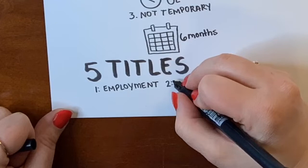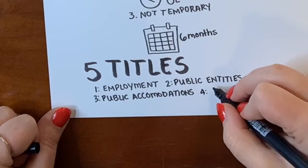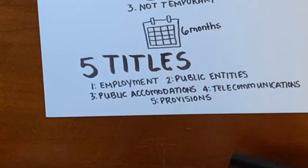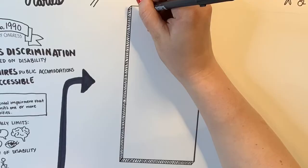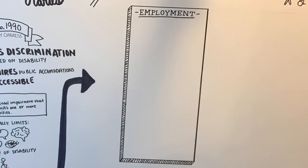The ADA is divided into five different sections called titles. Title I is about employment. Title II is about public entities and public transportation. Title III is about public accommodations and commercial facilities. Title IV is about telecommunications, and Title V is provisions. Let's take a look at Title I: Employment. This says that people with disabilities should have the same employment opportunities and benefits as everyone else.